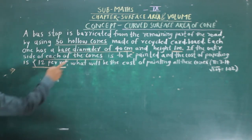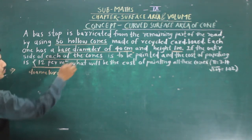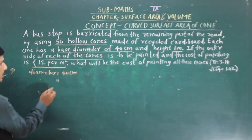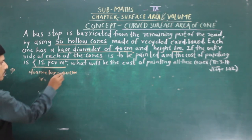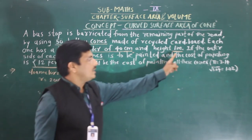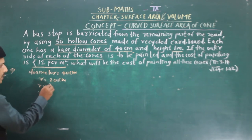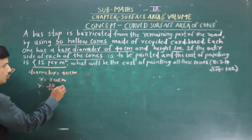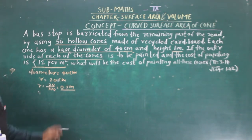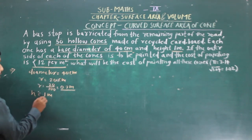In the solution: base diameter is equal to 40 cm. So the radius will be half of that — 20 cm. But the height is given in meters, so we will convert the radius into meters. Radius is equal to 20 divided by 100, that is 0.2 meters. Height h is equal to 1 meter.